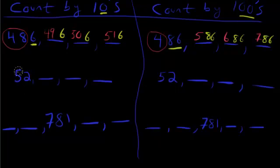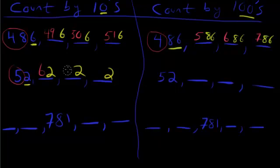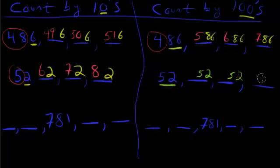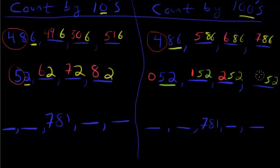Next: 52 counting by 10s. Only one number stays the same, so it's 2 throughout. The 5 becomes 6, then 7, then 8. Now counting 52 by 100s: two numbers stay the same, so 52 stays throughout. Everything to the left should change — but there's nothing there because it's a 0. The 0 becomes 1, then 2, then 3.